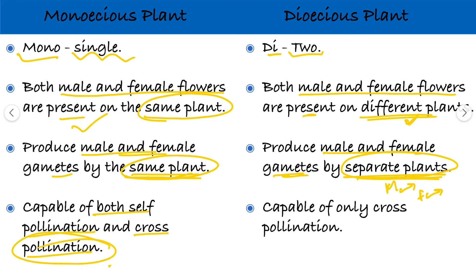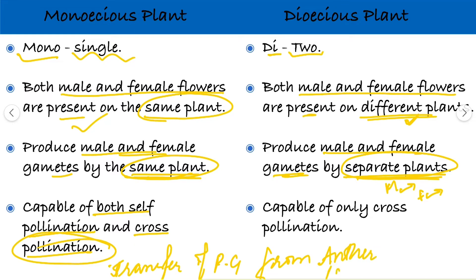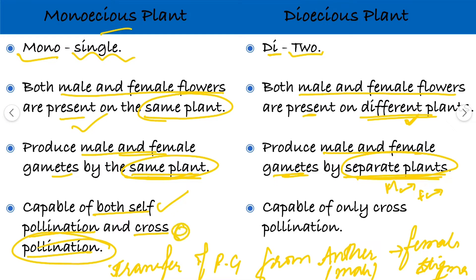Pollination is the transfer of pollen grains from the anther — that is the male part — to the female stigma. Monoecious plants are capable of doing self-pollination, meaning pollination within the same plant, and also cross-pollination to another plant. But in case of dioecious plants, they are capable of only cross-pollination, because there is a separate male plant and a separate female plant.